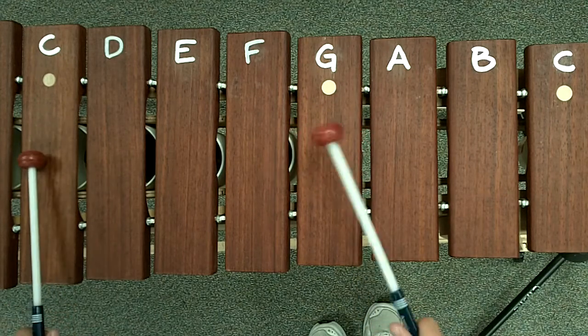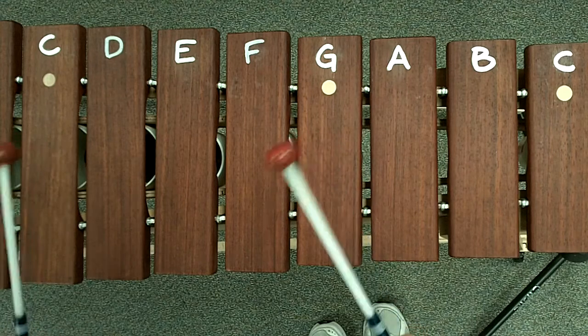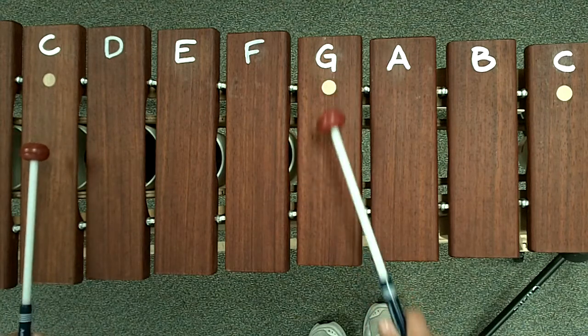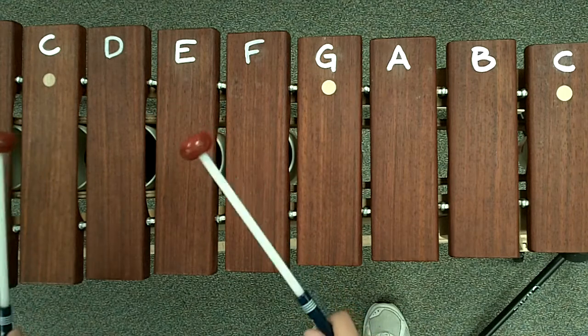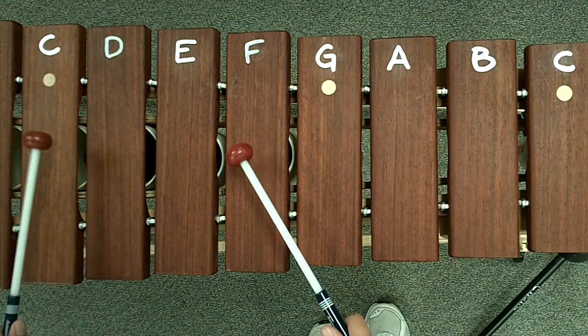You're going to start with C and G. Bump, bump, tee, tee, tee, tee. Then you're going to move the G down to F. Bump, bump, tee, tee, tee, tee. Notice I kept it on the C.